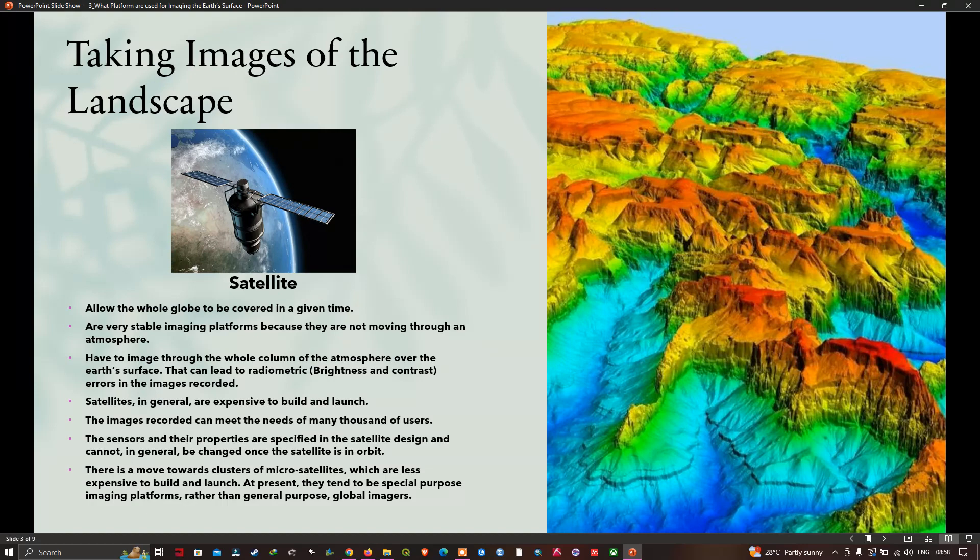Nevertheless, imaging through the atmospheric column introduces brightness and contrast errors into the recorded image data, which often requires correction before the image is usable. Because satellite programs are so expensive to develop, build and launch, the data tends to be made available to many thousands of users and tends to be regarded as a common good product.